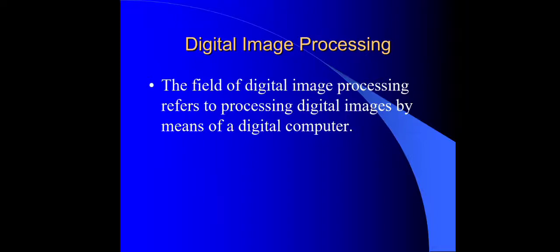A digital image is made of pixels. A pixel is a small element, a small component of a digital image. So the image is a two-dimensional signal in the x-y plane, and each small unit is called a pixel.